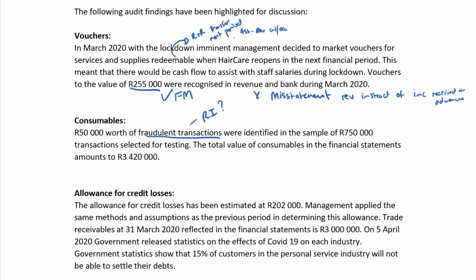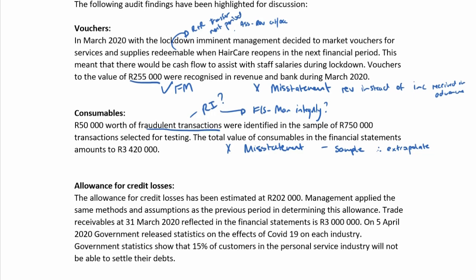The R50,000 in fraudulent transactions was identified in a sample of 750 transactions selected for testing. The total value of consumables in the financial statements amounts to R3.42 million. Because the fraudulent transactions were found in a sample, I need to extrapolate to potentially identify more in the population. I also note a potential reportable irregularity and a risk regarding management's integrity — if management are involved, multiple balances or transactions could have fraud in them.